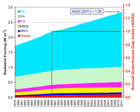CO and NMVOCs produce CO2 when they are oxidized. They remove OH from the atmosphere, and this leads to higher concentrations of methane. The surprising effect of this is that the global warming potential of CO is three times that of CO2. The same process that converts NMVOCs to carbon dioxide can also lead to the formation of tropospheric ozone.